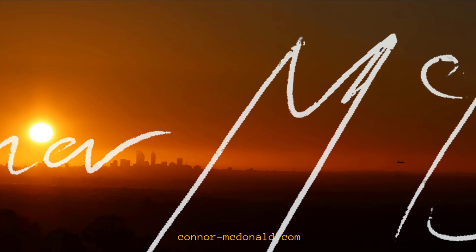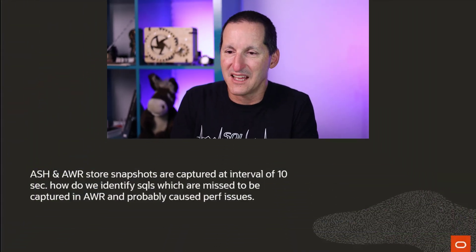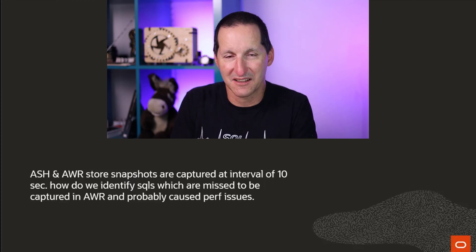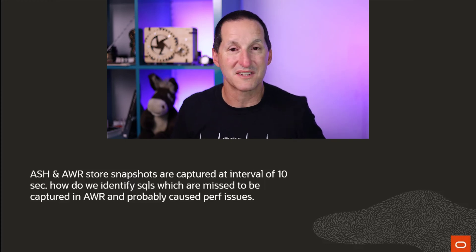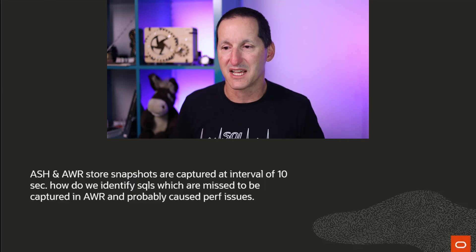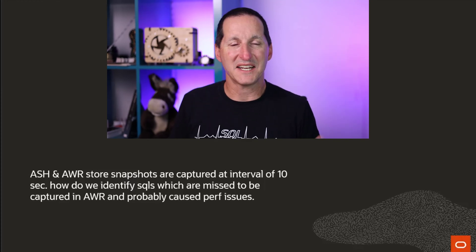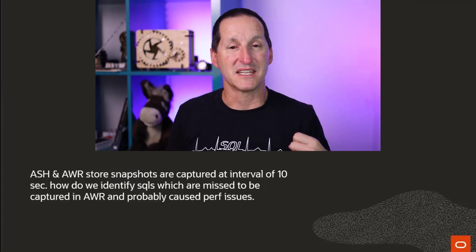That's the last slide you'll see — let's do some straight database talk, no slides. Let's talk about ASH and AWR. ASH and AWR store snapshots which are captured at an interval of 10 seconds. Based on this, how do we identify SQLs which are missed from being captured at those 10-second intervals and probably cause performance issues?